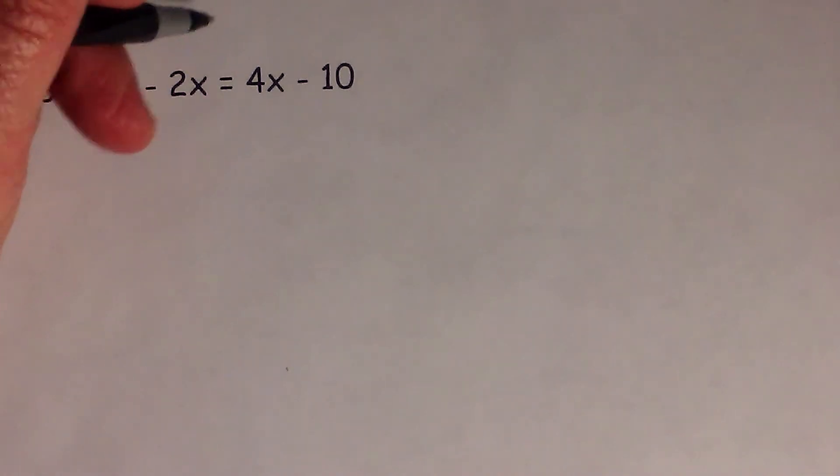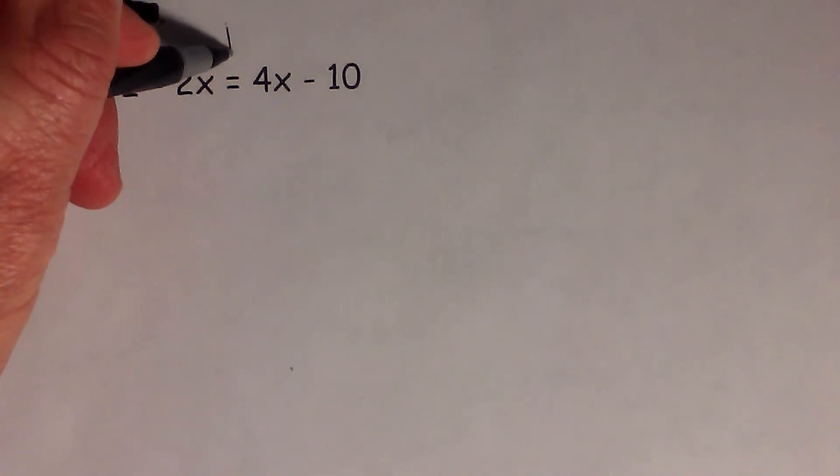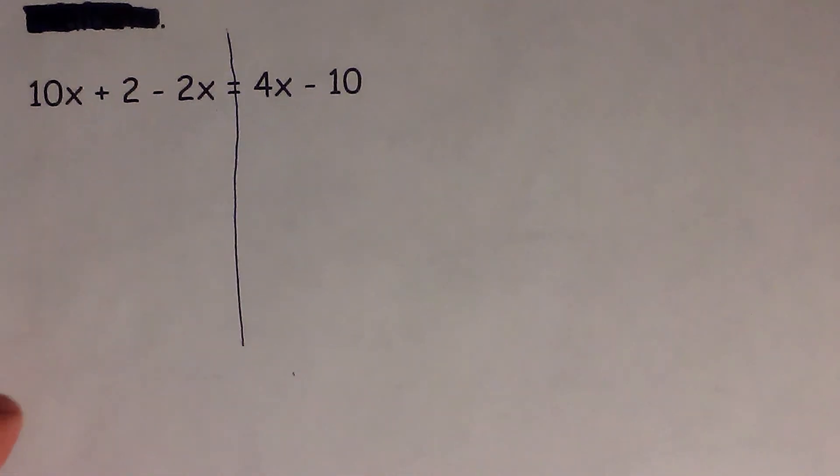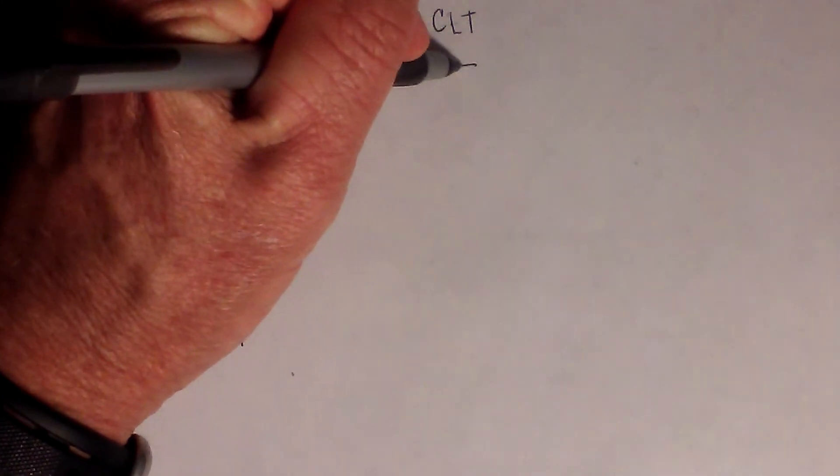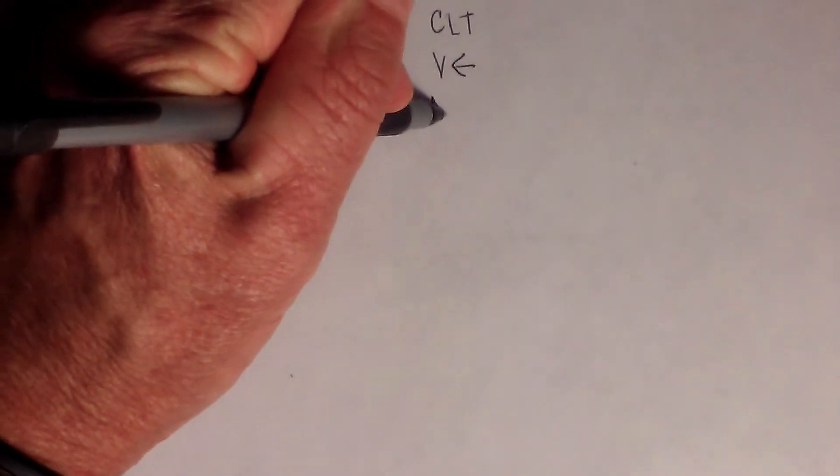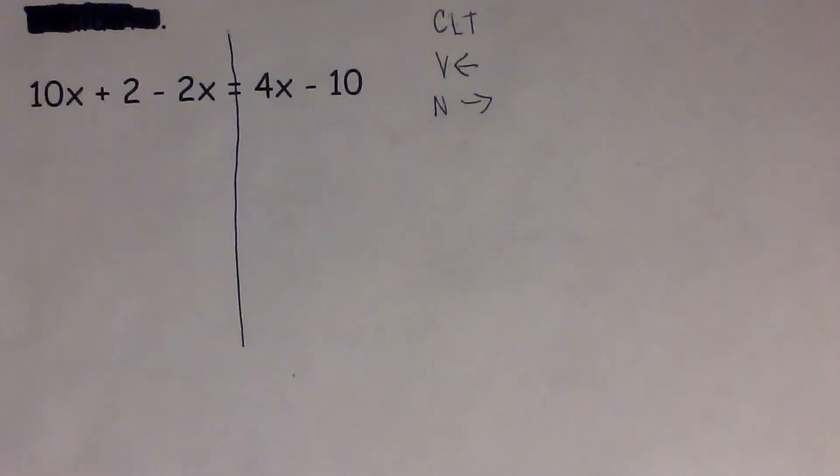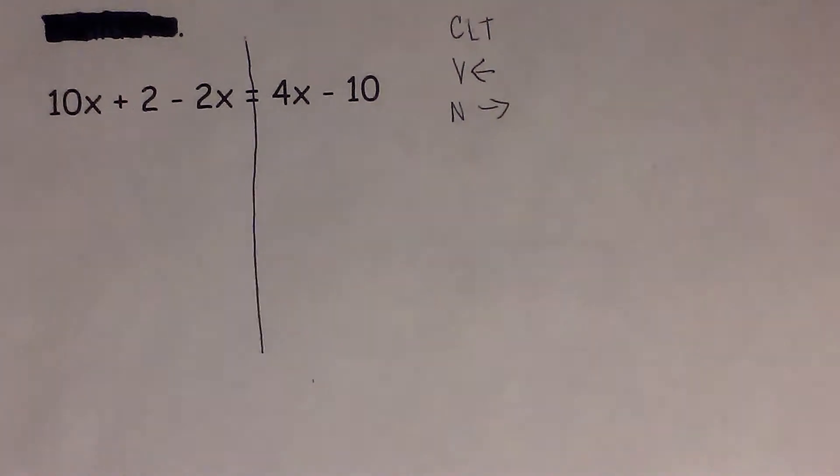The easy way to complete this is to draw a line from the equal sign, and this helps organize it. Remember, you will CLT—combine like terms—put the variables on the left and the numbers or constants on the right. Let's get started with this example problem.